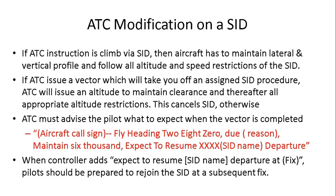If ATC instructs to climb by SID, the aircraft must maintain the lateral and vertical profile and follow all altitude and speed restrictions of the SID. If ATC issues a vector that takes you off the assigned SID procedure, all altitudes will be assigned by ATC, which cancels the SID. Otherwise, ATC must advise the pilot what to expect when the vector is completed, such as 'expect to resume SID.' When the controller adds the phrase 'expect to resume SID,' the pilot should be prepared to rejoin the SID at a subsequent fix.